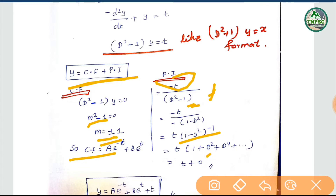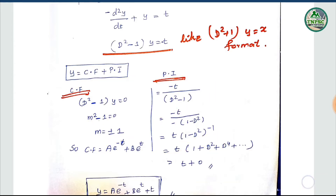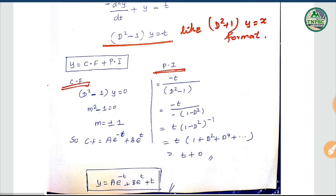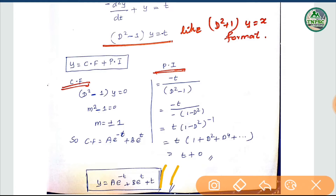Expanding: 1 plus D-squared plus D-power-4 plus D-power-6. Multiplying with t — since D²(t)=0 — we get minus t. Therefore, the general solution is y equal to a·e^(-t) plus b·e^(t) minus t.